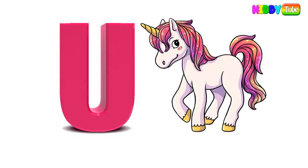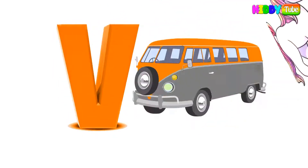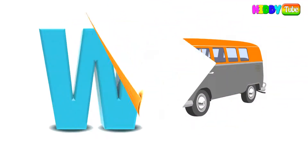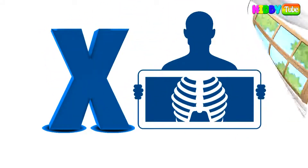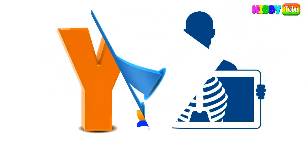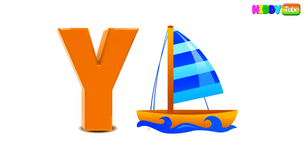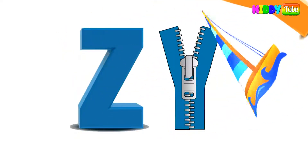U for Unicorn, V for Van, W for Window, X for X-Ray, Y for Yacht, Z for Zipper.